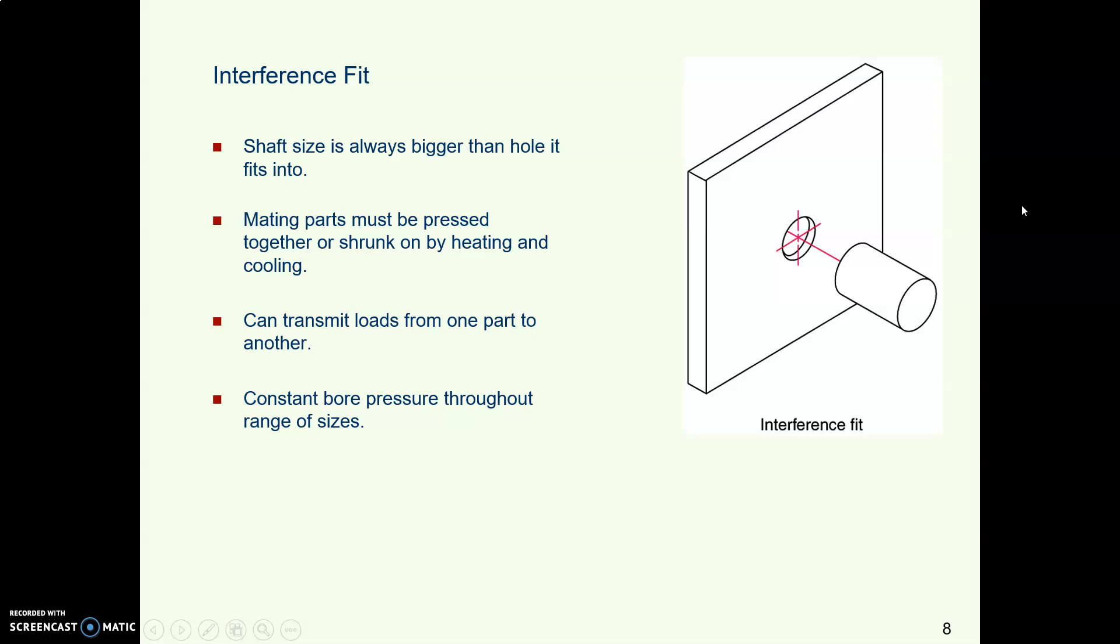So the hole is always smaller than the thing that's supposed to fit into it. Why this is good is once you get these parts pressed together they act as one piece. So you might be pressing a bearing into a bearing housing and you don't want the bearing race to spin around. Or you might be fitting a machine shaft into some other part and you want it to be fixed.